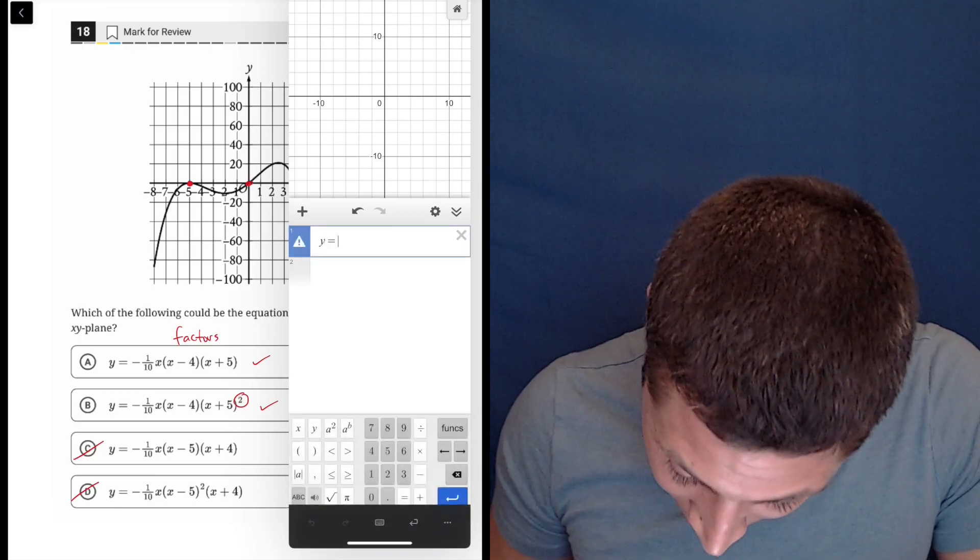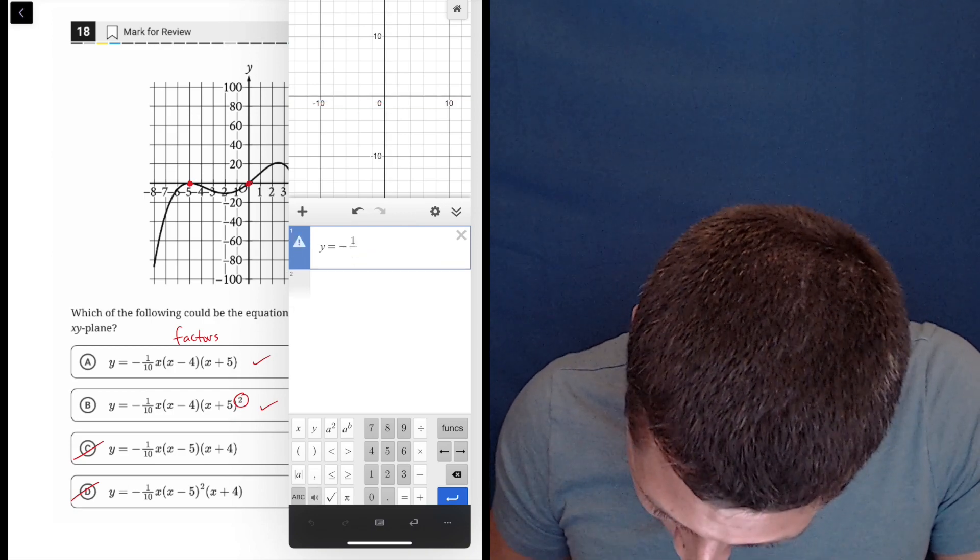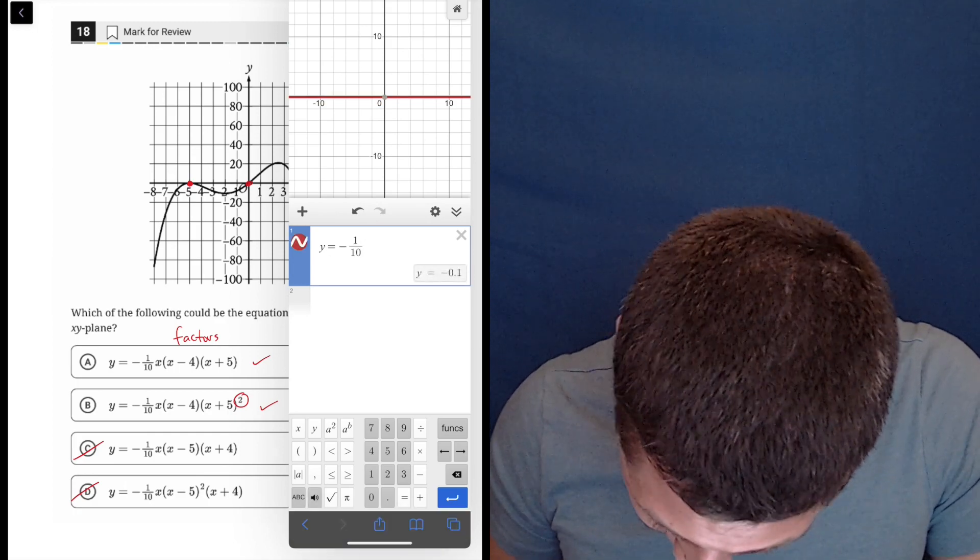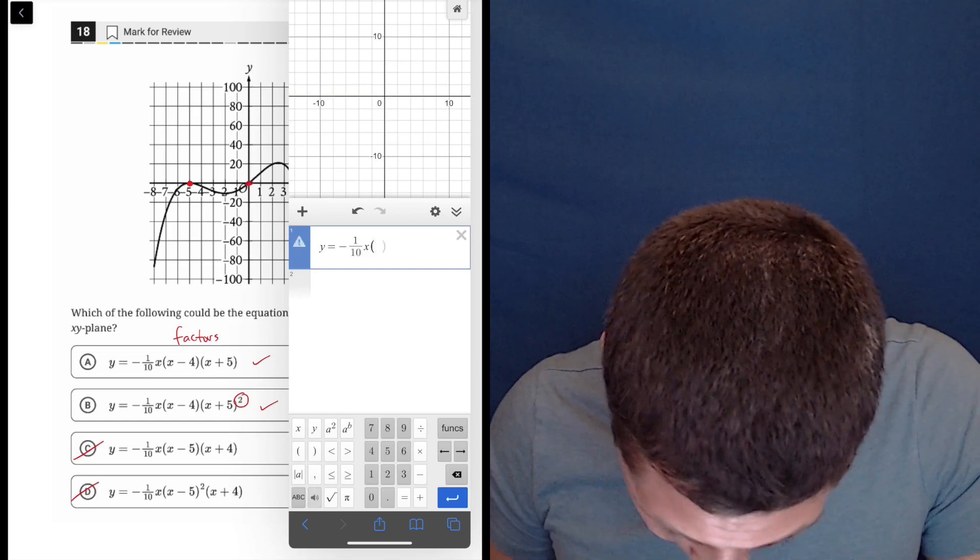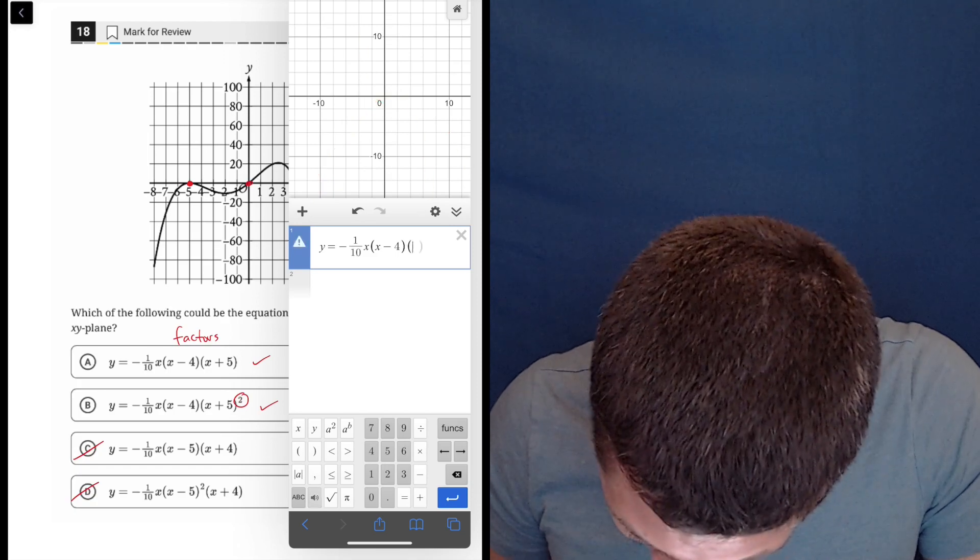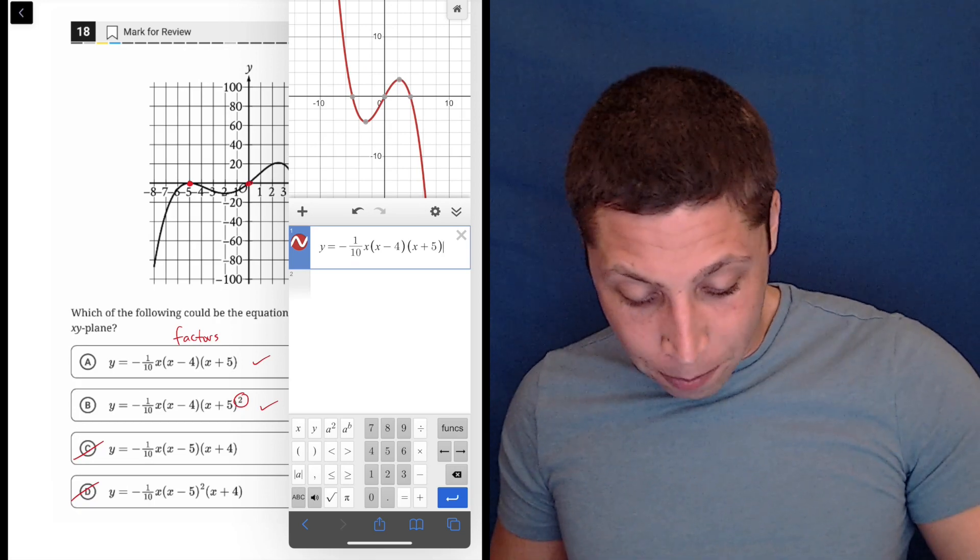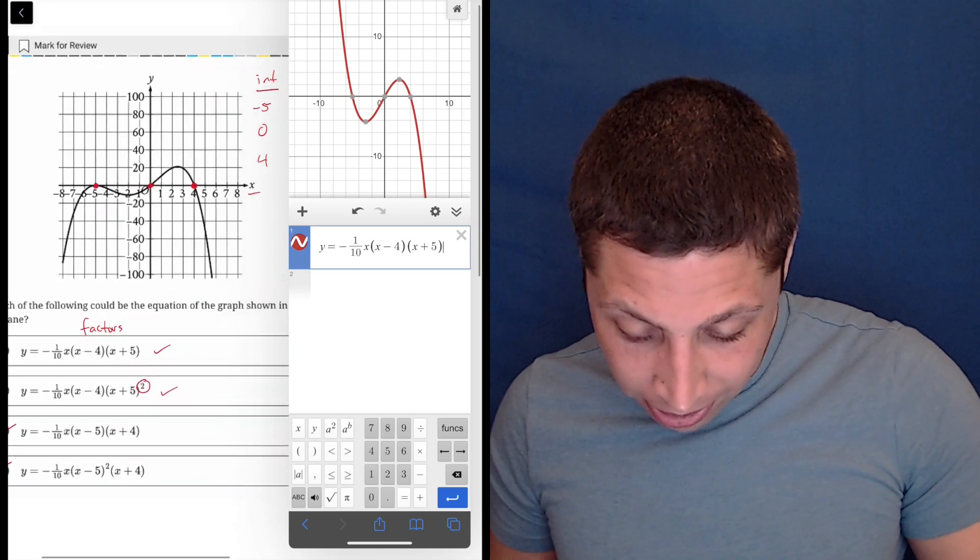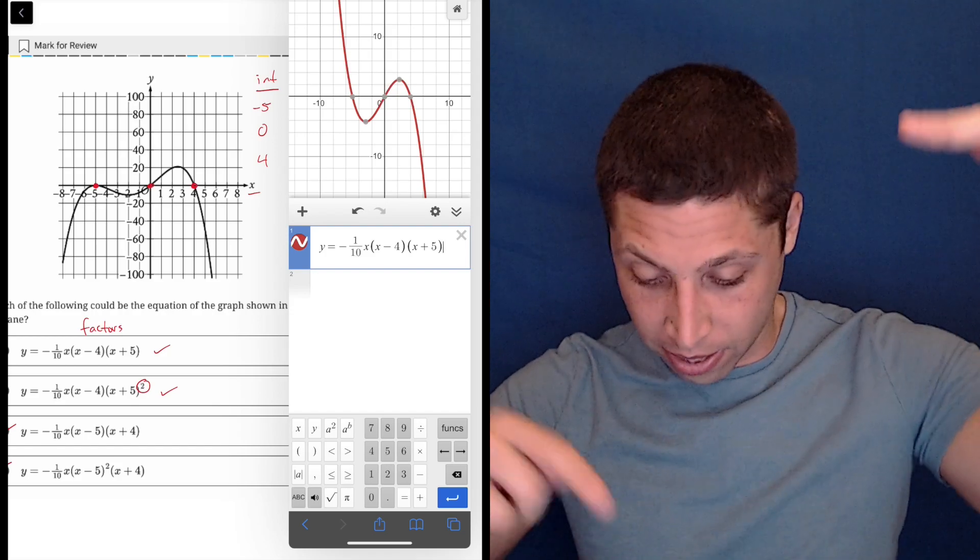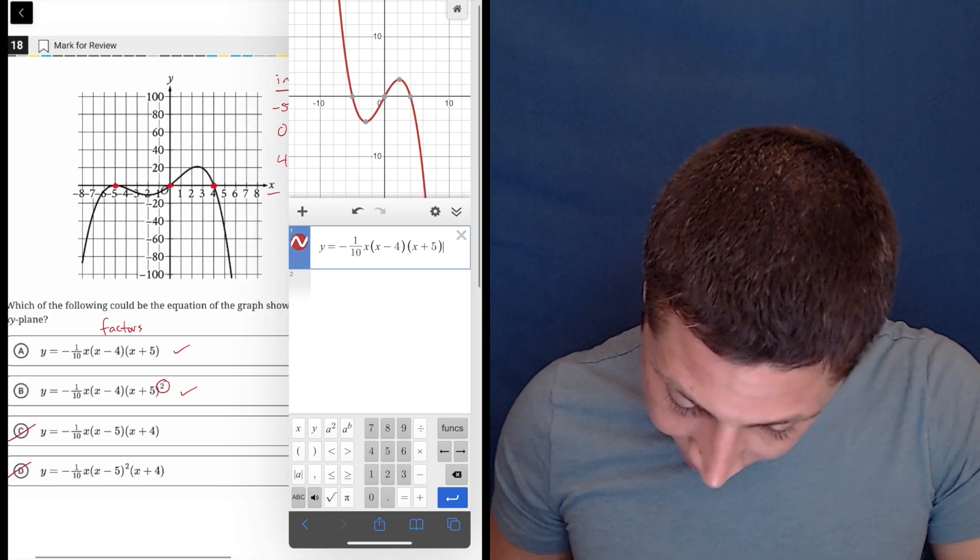y equals negative one divided by 10 times x times x minus four times x plus five. I'm going to see what it looks like. And it doesn't quite look like the picture that I'm supposed to have, right? The picture I have goes down on both sides. This one seems to go up on one side and down the other. It still kind of does a loop-de-loop, but it's a little different. So why don't I add the squared and see if that makes it look a little better.